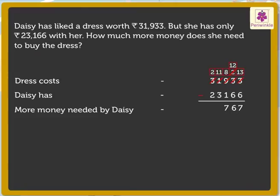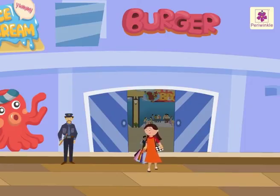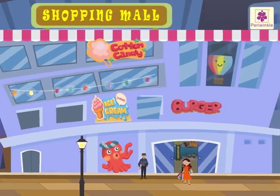Therefore, 11 minus 3 is equal to 8 thousands. Lastly, subtract the ten-thousands: 2 minus 2 is equal to 0. Thus, the difference is 8,767. Daisy needs 8,767 more rupees to buy the dress. Wasn't it fun to solve subtraction while shopping with Daisy?